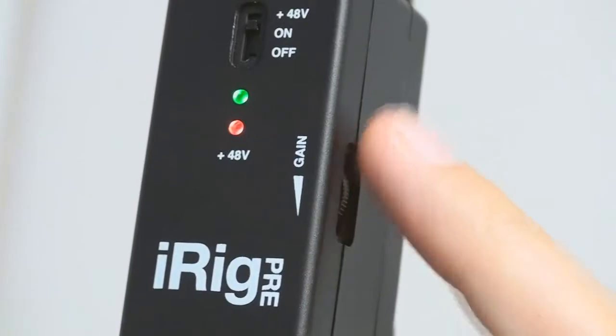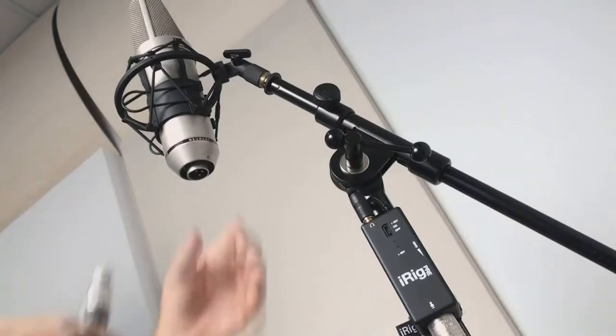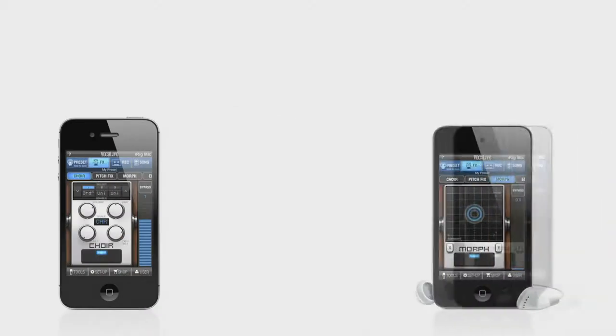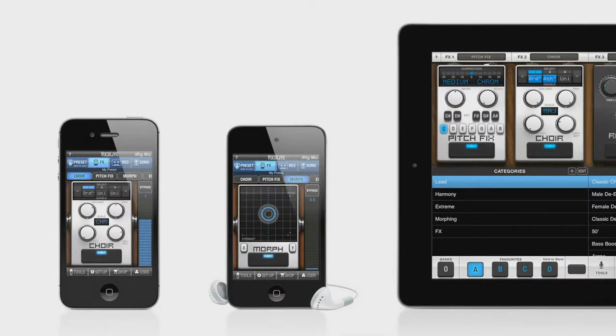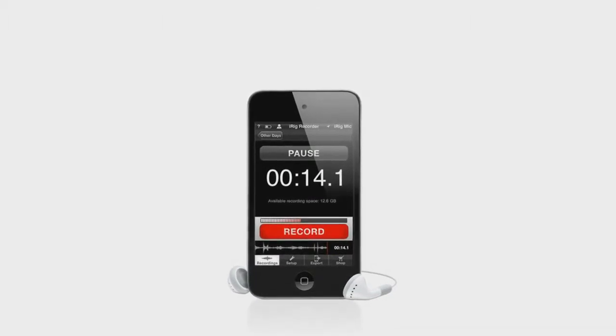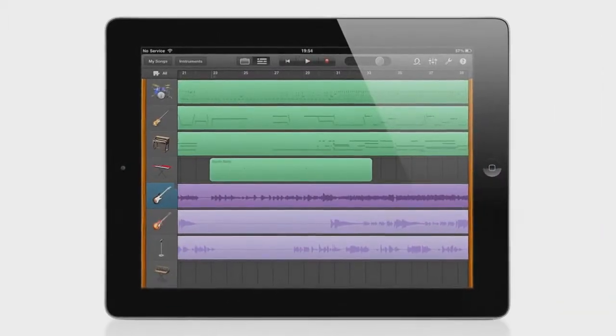iRig Pre has an adjustable gain control that lets you match the level of your favorite microphones with your favorite iOS apps, such as IK Multimedia's Vocal Live iRig Recorder or any iOS app that works with an analog audio input, such as GarageBand.